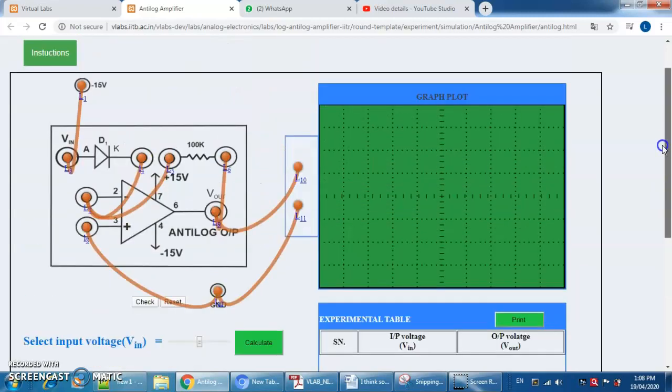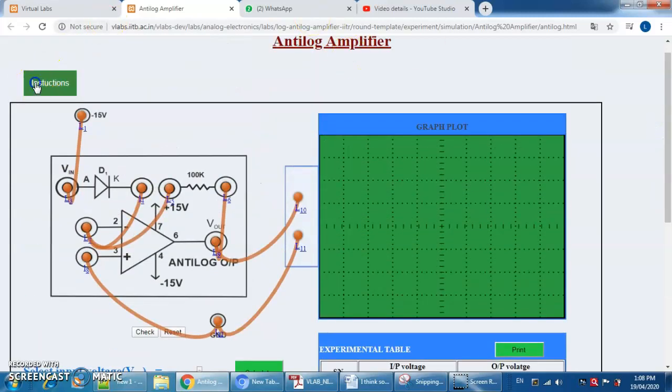So first of all after the connection, what we need to do is increase the input voltage up to 50 millivolts. After that we need to plot the input-output characteristics.